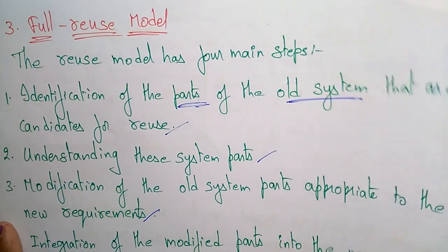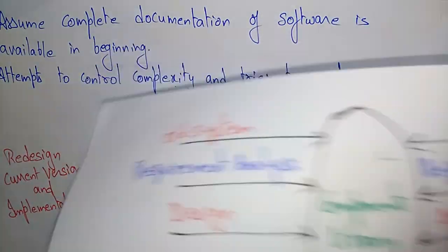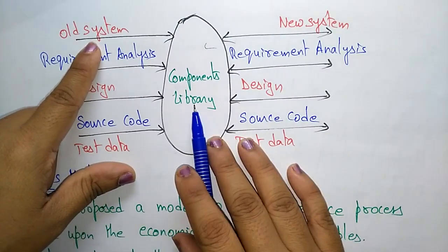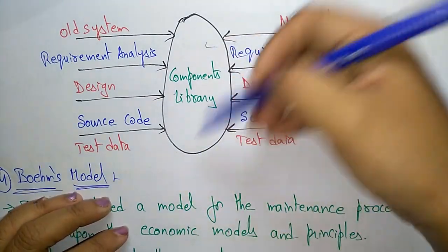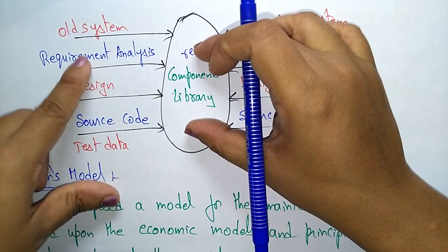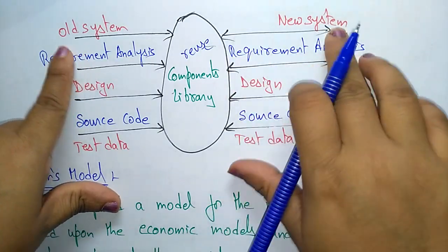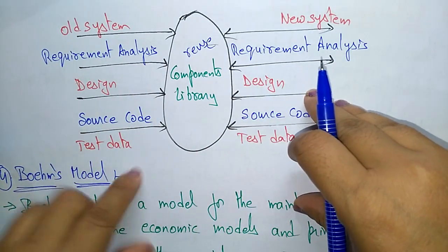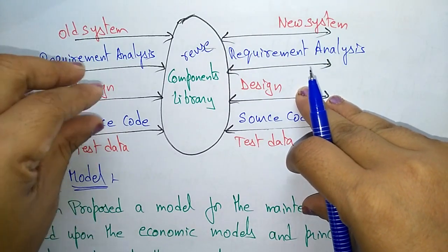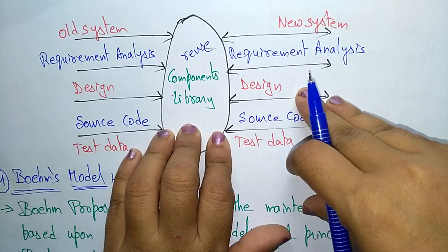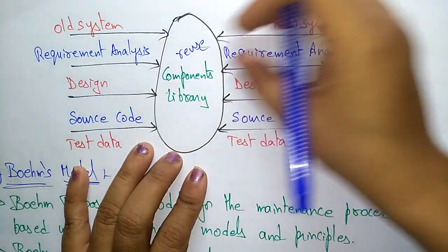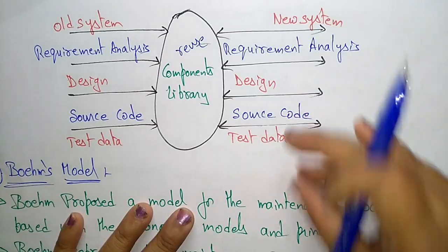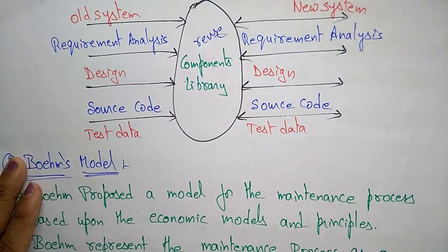So this is the full reuse model — you can maintain the system like this. Here you can see a component library is present. From this library, you take components which are useful for reuse. The old system can be converted into a new system by using these library components — requirement analysis, design, source code, text data, everything useful for reuse can be taken from the component library to develop the new system.